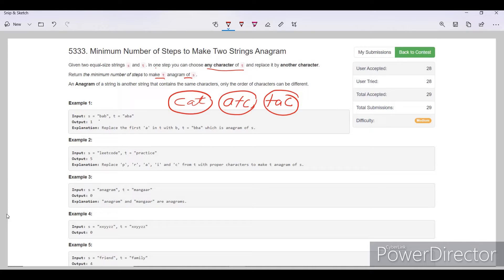Now we have BAB here and ABA. A simple approach to this problem would be to have a map here. So for string S, number of B is 2, number of A is 1. Now for string T, number of B is 1 and number of A is 2.